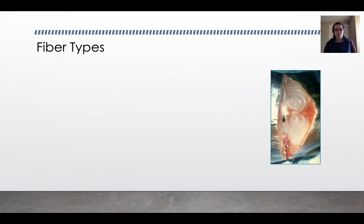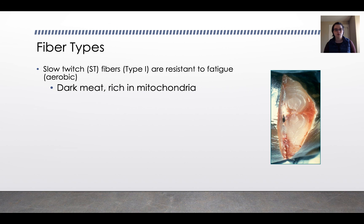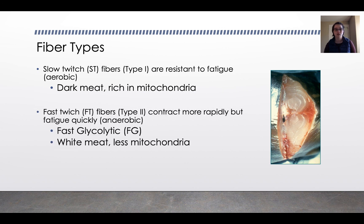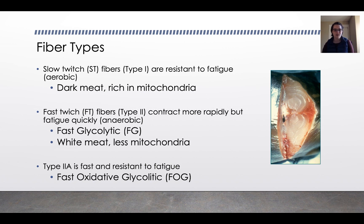There are different types of muscle fibers that are innervated this way. There are slow twitch muscle fibers or sometimes called type 1 fibers that are resistant to fatigue. They're very aerobic fibers and these are rich in mitochondria, and if you look at meat they will be a very dark meat. Then you have fast twitch fibers or type 2 fibers that contract more rapidly but fatigue very quickly. These are anaerobic contractions, so these work on a fast glycolytic cycle and they have less mitochondria than the slow twitch fibers. And then there's a third type called type 2a, and it's fast and resistant to fatigue, a fast oxidative glycolytic cycle.